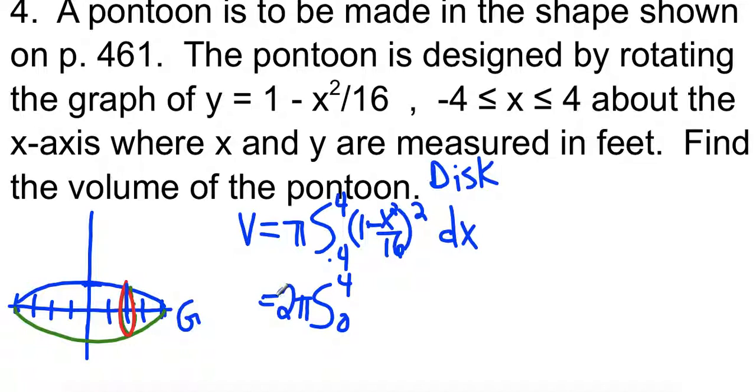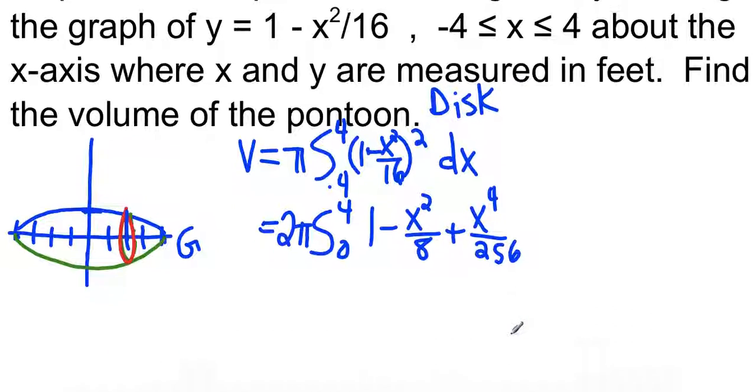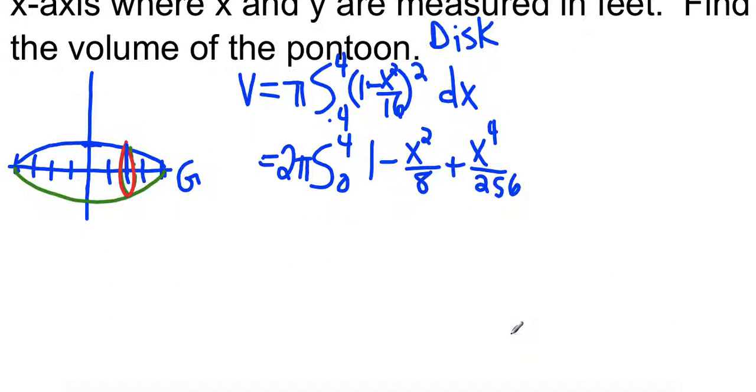I'm going to foil this out. That gives us 1 minus negative x squared over 16. So negative x squared over 8 plus x to the 4th over 256. All right, so dx.